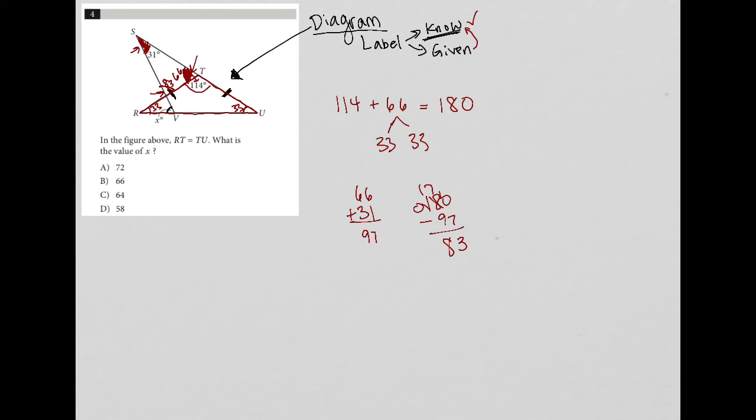And then, what else do I know? I keep asking myself, what else can I find? What else do I know? Well, if this is 83, and maybe I'll switch colors because I'm getting a little hectic here. If this angle is 83, then that means that this angle here, which is considered a vertical angle to that 83, that angle is also 83.